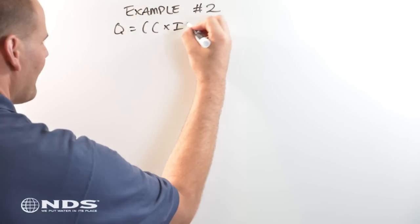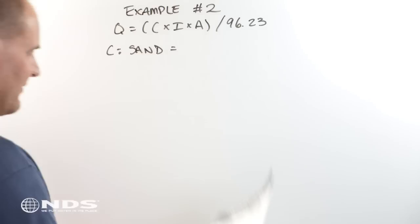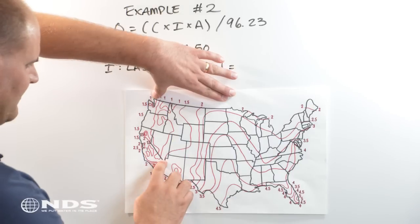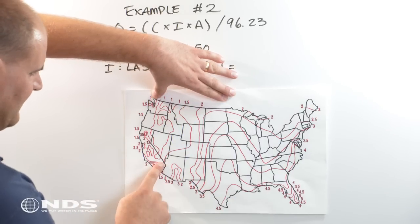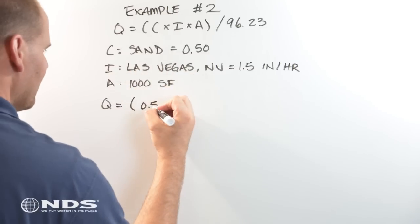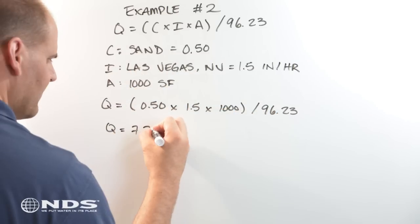Let's do another example. This time, the surface is sand, so the C value is 0.5. The house is in Las Vegas, Nevada, and the runoff area is 1,000 square feet. The expected runoff here is 7.79 gallons per minute.